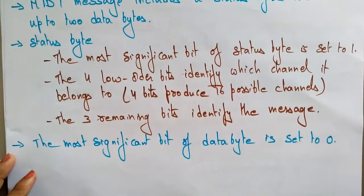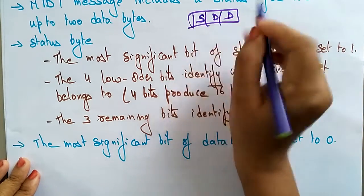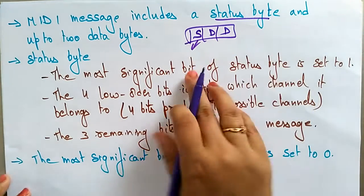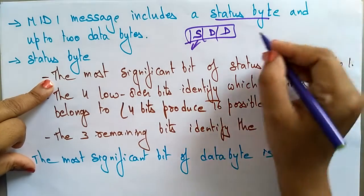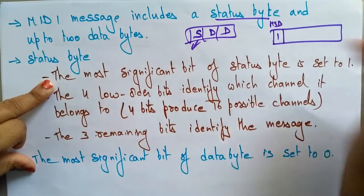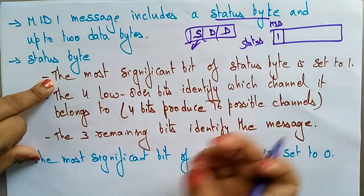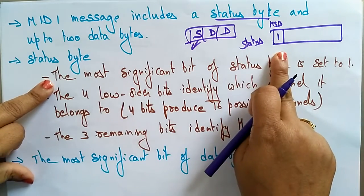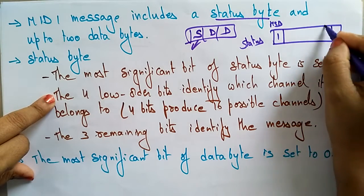A MIDI message includes a status byte and up to two data bytes. The status byte is one byte in size, and its most significant bit (MSB) is set to one. This distinguishes it as a status byte within the MIDI message structure.